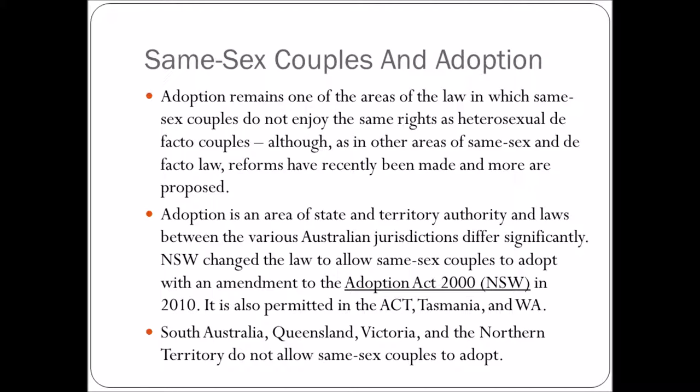We're going to look at same-sex couples and adoption specifically. Adoption remains one of the areas of law in which same-sex couples do not enjoy the same rights as heterosexual de facto couples, although reforms have improved the situation. Adoption is an area of state and territory authority and laws differ significantly across Australian jurisdictions. New South Wales changed the law to allow same-sex couples to adopt with an amendment to the Adoption Act in 2010. It is also permitted in the ACT, Tasmania, and WA. However, South Australia, Queensland, Victoria, and the Northern Territory do not allow same-sex couples to adopt — so adoption is allowed in about half of Australia but not the other half.